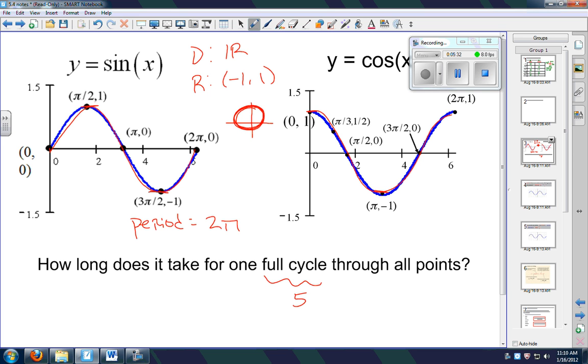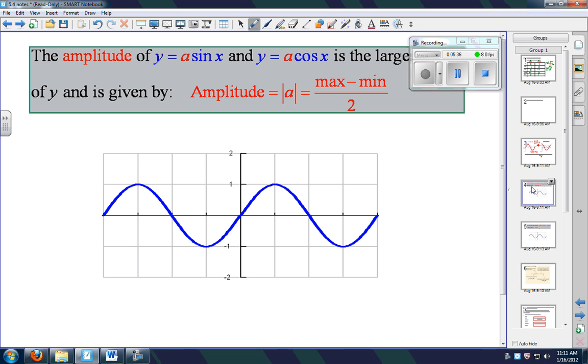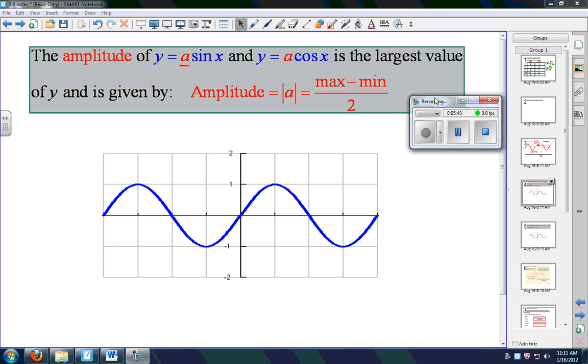Okay, so they call this guy amplitude. All right, so we put an 'a' out here. You guys may remember the a, h, and k transformations that you've done. We use some similar things. So we determine amplitude by the absolute value of this little guy out here. Okay, now what you do is you take your max minus your min and you divide it by 2.